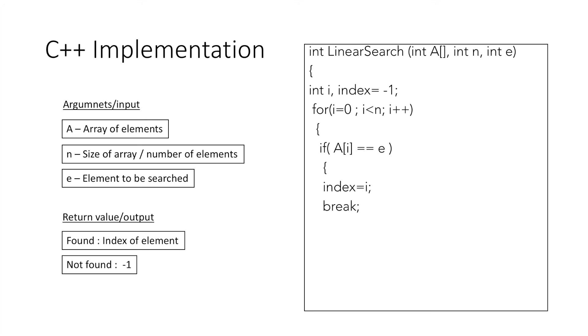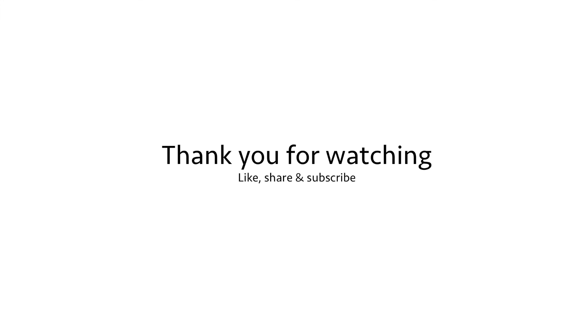If found, we store the index in the variable index and break out of the loop. If the element is not present in the array A, after the loop ends the variable index would have value -1. We return the value of index. That was all for this video, thank you for watching.